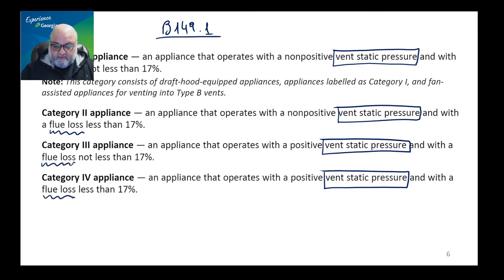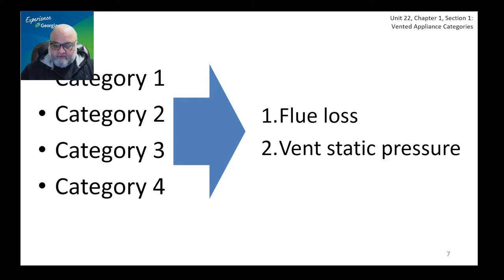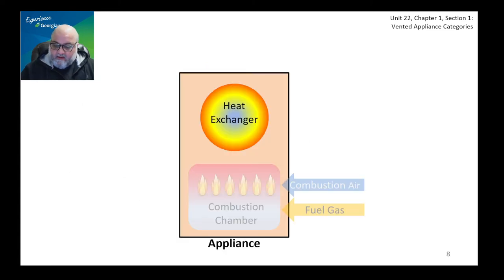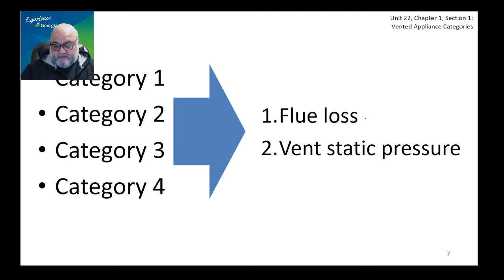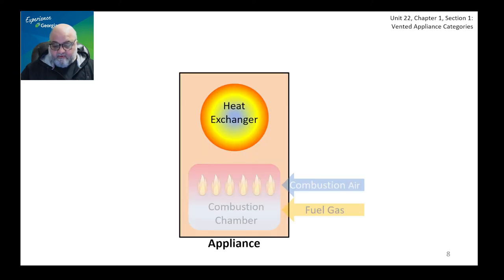What we're going to do is break down those factors and see how they determine what are the limits and borderlines of having an appliance categorized as either one, two, three, or four. So first, we are going to talk about flue loss. Let's talk about flue loss and see how things work.